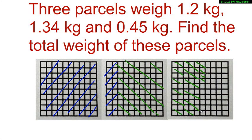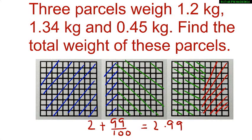Now, using a third color, represent 0.45 by shading 45 more squares. So, right here I have shaded 45 squares in red. So, what is the total weight of these parcels? Is it not 2 whole squares plus 99 by 100, or 2.99 kgs?